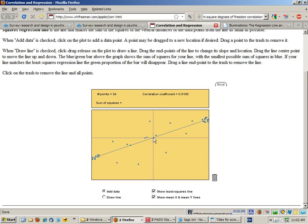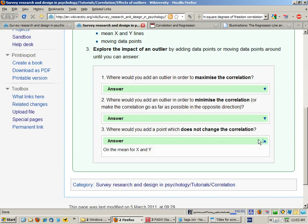So I'm adding points here and this correlation is not changing from 0.91. So the answer here is on the mean for X and Y.